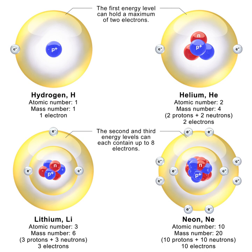The neutron is classified as a hadron, because it is a composite particle made of quarks. The neutron is also classified as a baryon, because it is composed of three valence quarks. The finite size of the neutron and its magnetic moment indicates that the neutron is a composite particle, as opposed to being an elementary particle. A neutron contains two down quarks with charge −⅓e and one up quark with charge +⅔e. Like protons, the quarks of the neutron are held together by the strong force, mediated by gluons. The nuclear force results from secondary effects of the more fundamental strong force.